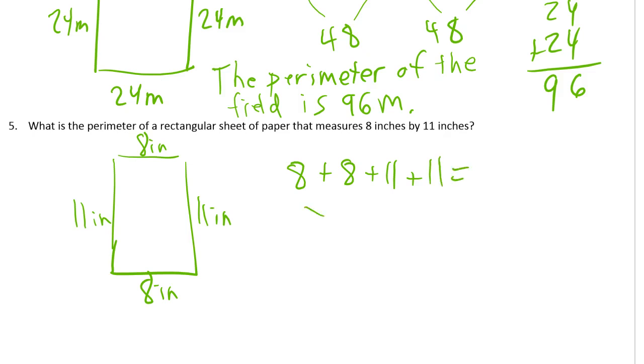8 plus 8 plus 11 plus 11. Okay, so that's 16 and 22. Or you could think of 2 nineteens, which would be 38. And that's fine. Here we go.